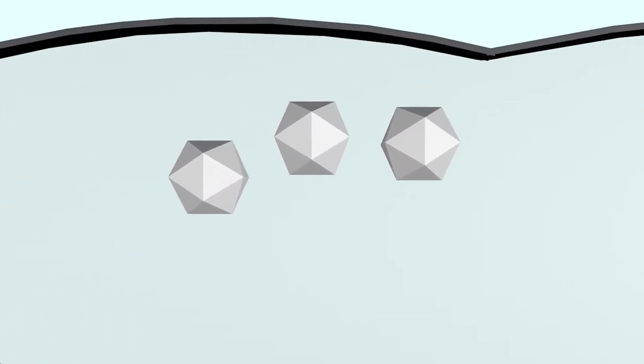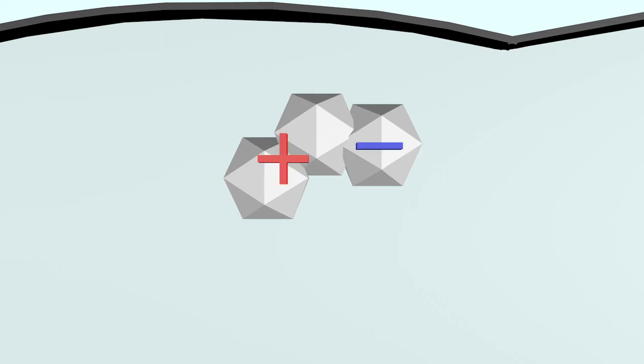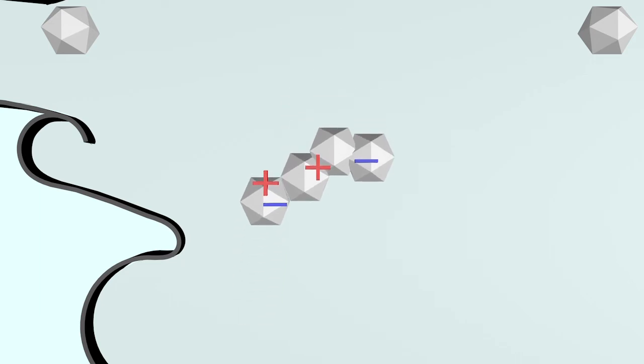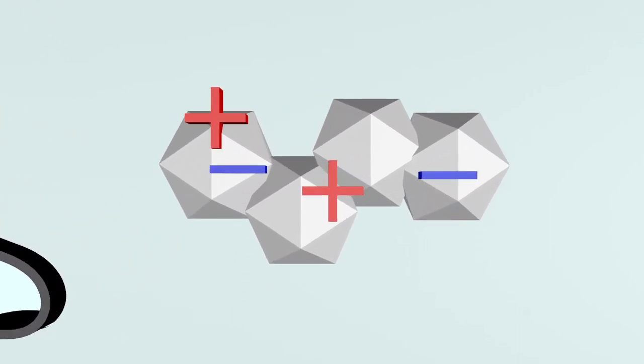Some ice crystals combine and grow into larger hail stones. The hail stones have as many positive as negative charges. At some point, these hail stones are so heavy that they can no longer be held up by the updraft. They fall down. On the way down, the hail stones collide with small ice crystals that move upwards.